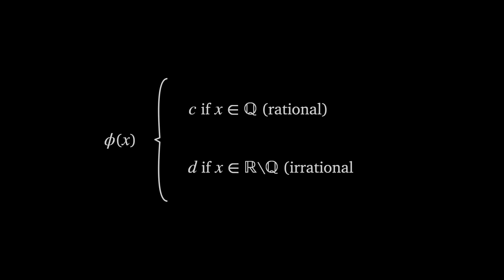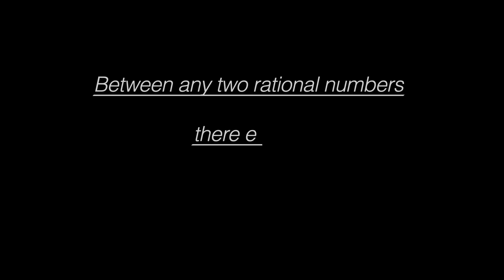Proving this is nowhere continuous isn't too difficult. First between any two rational numbers there exists an irrational number. Consider two rational numbers m over n and r over s and suppose r over s is greater than m over n.